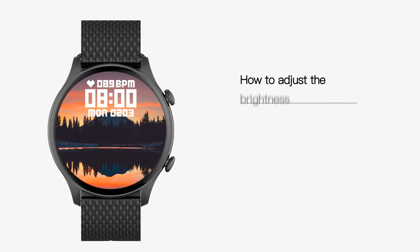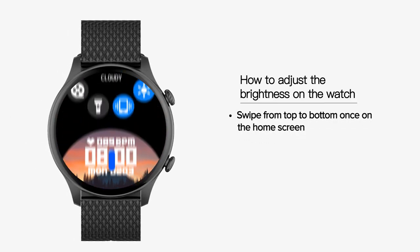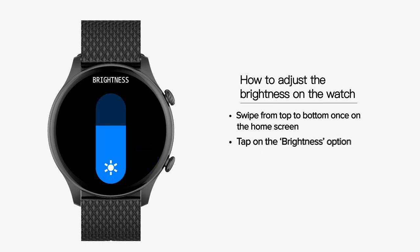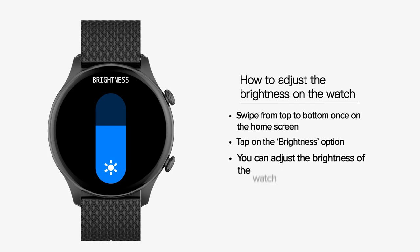How to adjust the brightness on the watch. Swipe from top to bottom once on the home screen. Tap on the brightness option. You can adjust the brightness of the watch accordingly.